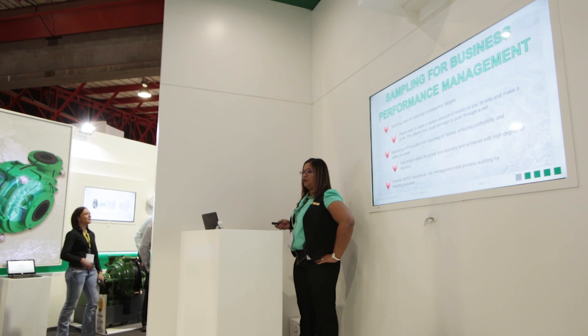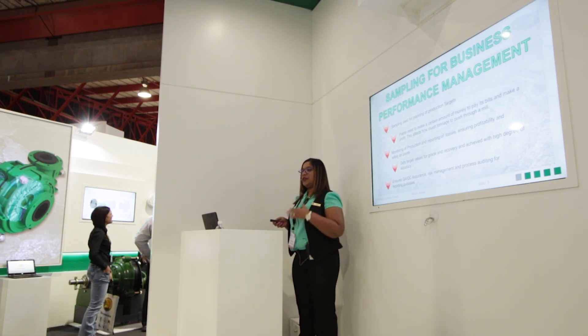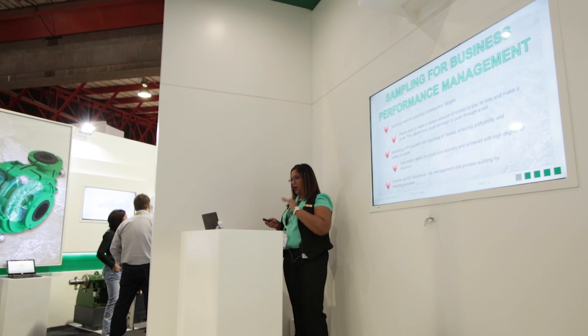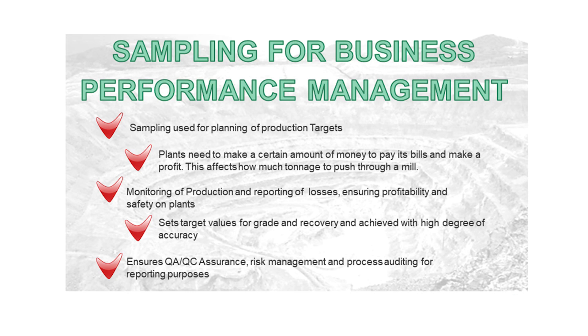When sampling for business performance management, this has everything to do with how your process plant performs. It's about your planning, production targets, grades and recoveries, quality assurance, quality control, and safety regulations. Sampling is used for planning of production targets, monitoring losses on the plant, and ensuring profitability and safety. Quality assurance and quality control measures are in place for risk management and auditing purposes. That's the role of sampling in determining your business or process plant performance.